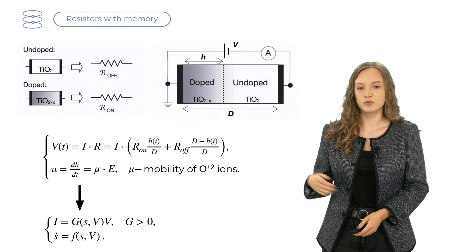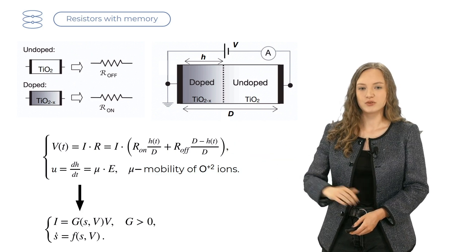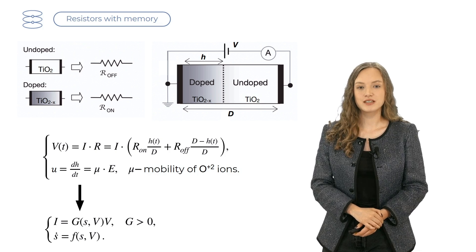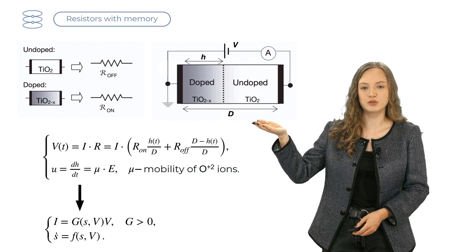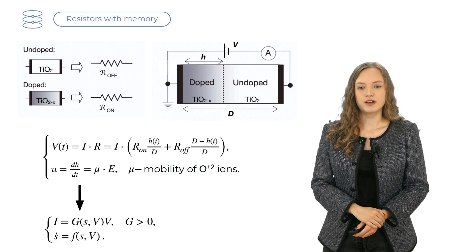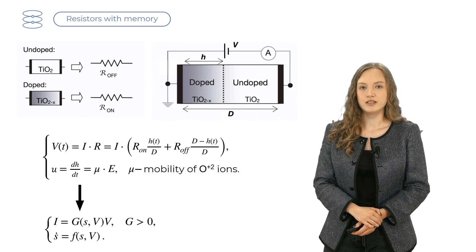This allows us to write down Ohm's law. So, voltage equals current times resistance, and to calculate resistance, we need to account for doped and undoped zones. So, we have R_on times H over D plus R_off times D minus H over D.